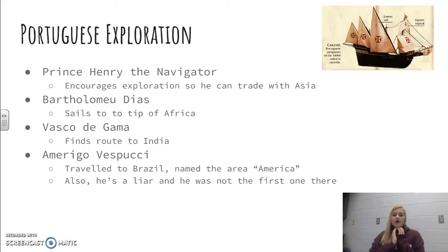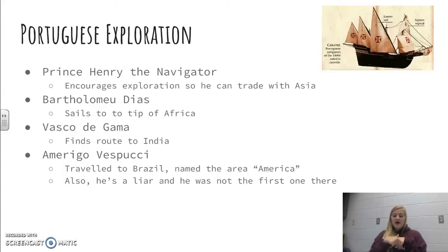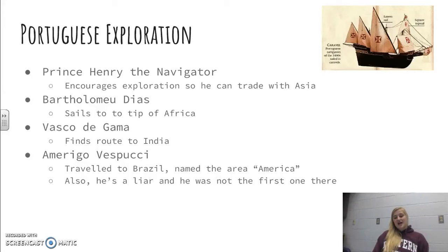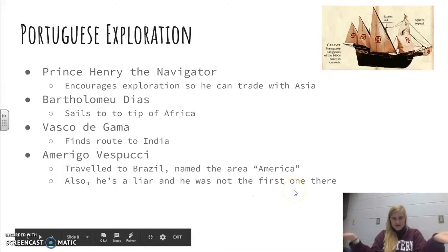Amerigo Vespucci — fun to say — was an explorer who lived from 1454 to the early 1500s. In 1500 exactly, he went to Brazil and gave his exposé on what Brazil was like. He is actually the person the Americas are named after — America, Amerigo. Even though we don't learn much about him, we have him to thank for our name. Portugal eventually established trade stations in India, Africa, China, and the East Indies, as well as the New World. Though he was a bit of a liar and was not the first one there, he named the continents after himself.